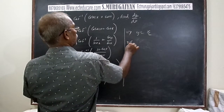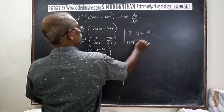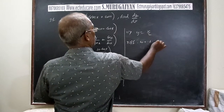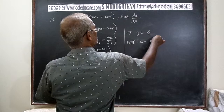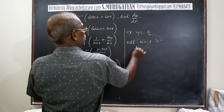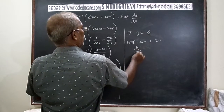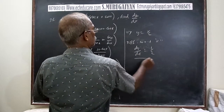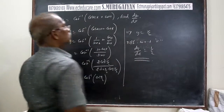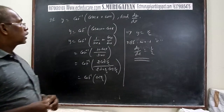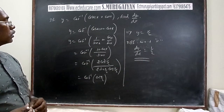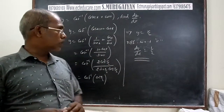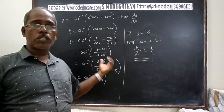Differentiating y = x/2 with respect to x, dy/dx = 1/2. Keep watching — we are going to discuss one more question.